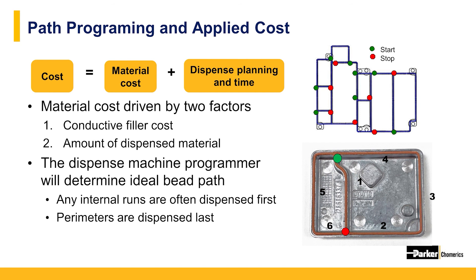Much of the cost incurred for form-in-place gasketing is the material and the time to program and run the parts. Most dispense machine programmers will determine the most effective way to run the parts while avoiding constant starts and stops and added time. Internal cavities and wall segments are often run first, with perimeter beads run at the end of the dispensing process. Some housings are more complex and require additional starts, stops, and T-junctions. Alternatively, a bead dispensed in a single path with only one start and one stop location simplifies the process, reducing time and lowering cost.